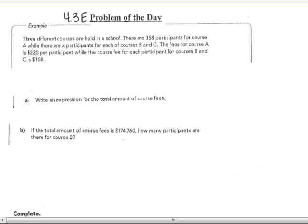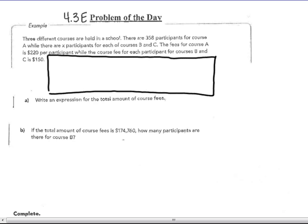So write an expression for the total amount of the course fees. Rather than writing three let statements because I have three variables here, course A, course B, and course C, I'm going to set it up in a table. So I'm going to be using a table today. And the course that I have is course A, B, or C.